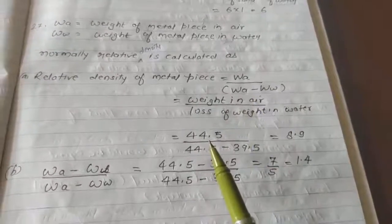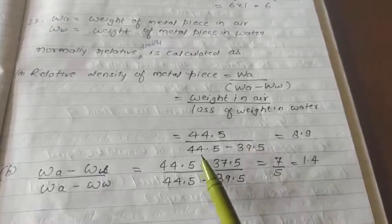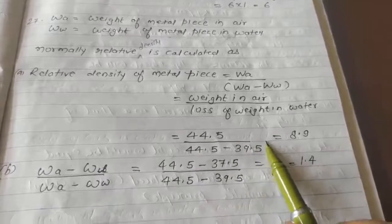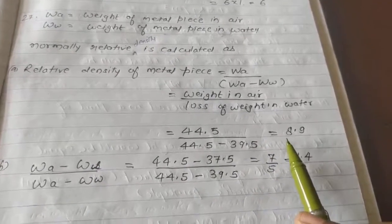So, W a's value is, metal piece's weight in air is 44.5. And again, here 44.5 minus 39.5. So, your answer will come here, where the relative density will be 8.9 for the metal piece.